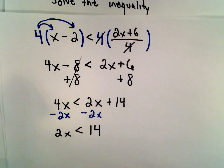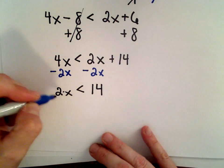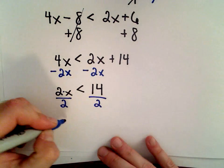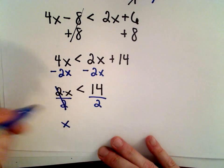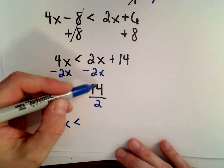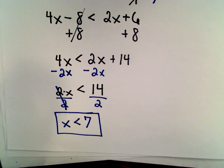Now the last thing I want to do is get x all by itself. Since I'm multiplying by positive 2, I'm going to divide both sides by positive 2. The 2s will cancel, we'll be left with x on the left side. That's less than 14 divided by 2, which is positive 7. That's our solution.